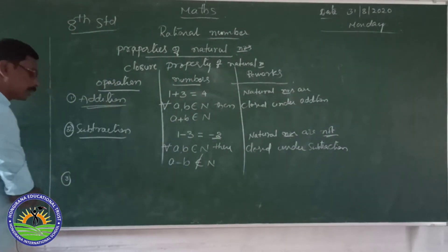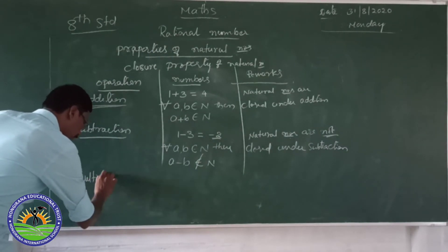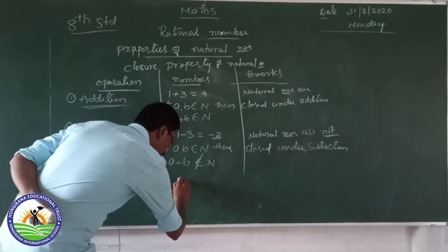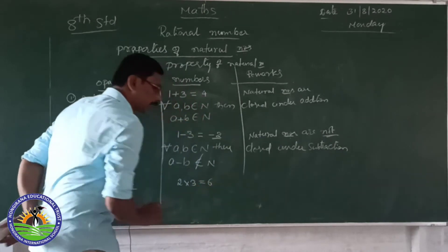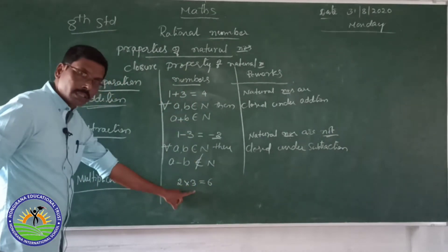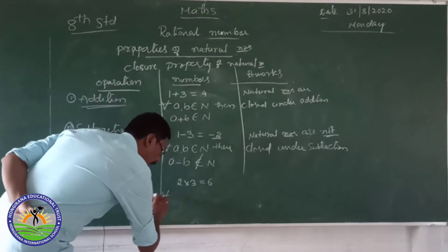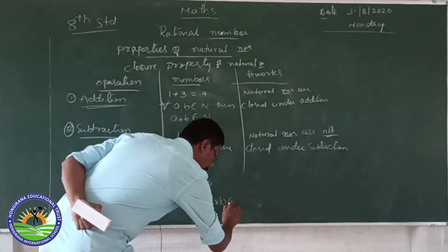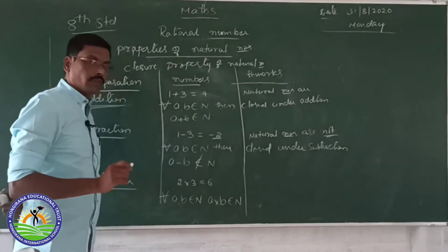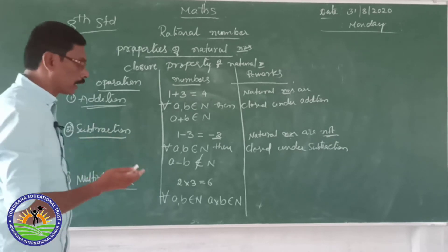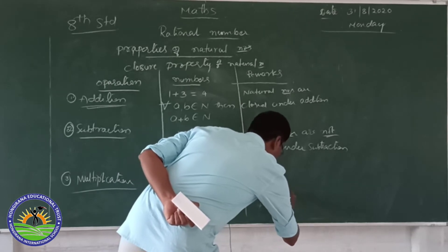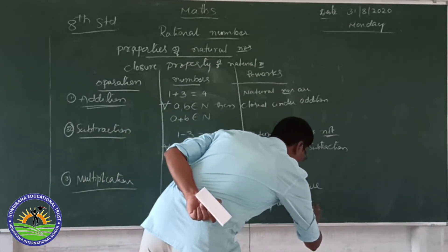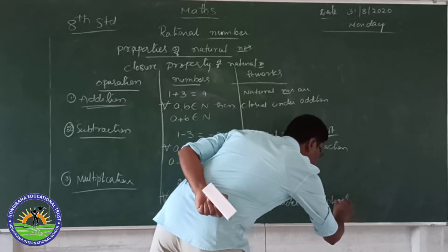The third operation is multiplication. We take any two natural numbers, 2 into 3. We get 6. The product of any two natural numbers gives another natural number. Therefore, in general, for all A, B belonging to N, A into B also belongs to N. Therefore, the conclusion is that natural numbers are closed under multiplication.